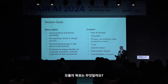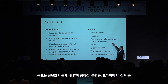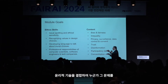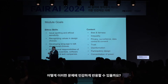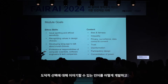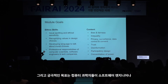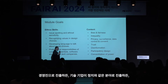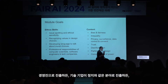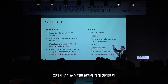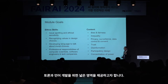The module goals combine content and ethical skills. Content areas include bias and fairness, inequality, privacy, and trust—things with large societal implications. The ethical skills component focuses on how students recognize issues, become sensitized to them, and develop language to talk about moral choices across disciplines. The ultimate goal is for computer scientists to have professional responsibilities they carry with them, whether they go into roles as software engineers, tech company executives, or move into areas like politics.